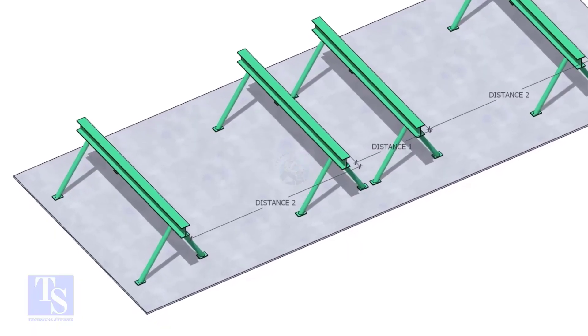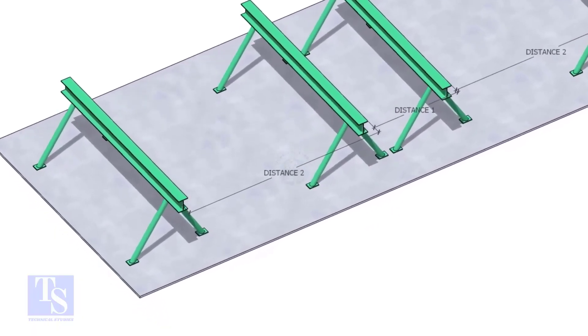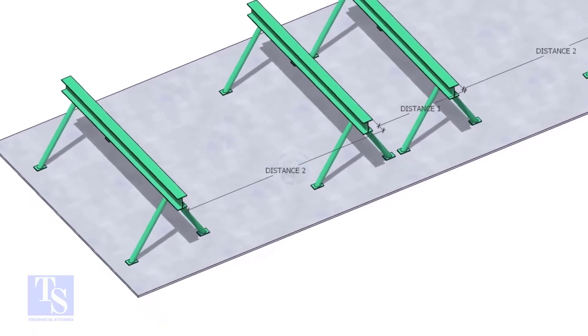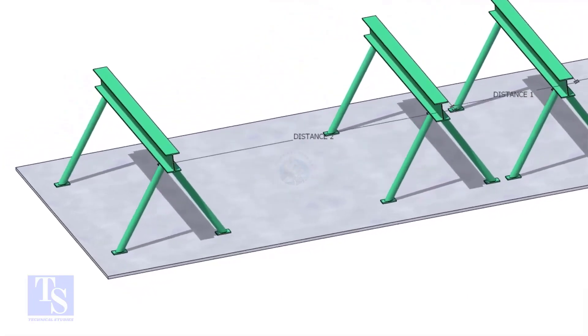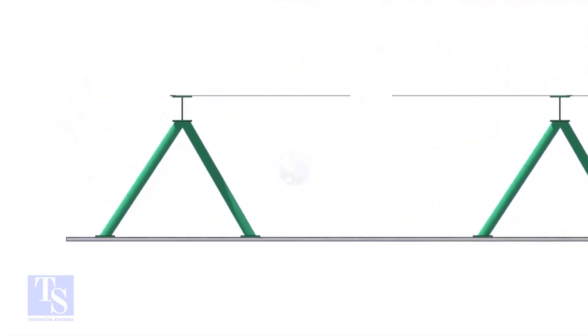Distance 1 shall be 1 meter to 1.2 meters. And distance 2 shall be 2 to 2.5 meters, less than the random pipe.